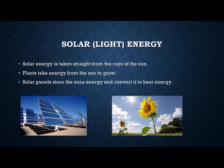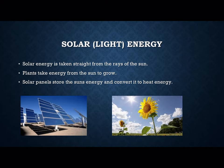Solar energy is the way the earth obtains most of its energy. For example, it comes from the sun's rays. Plants take energy from the sun to grow — this method is called photosynthesis. Solar panels can store the sun's energy and convert it to both heat energy and electrical energy, making it our primary source of energy on the earth.